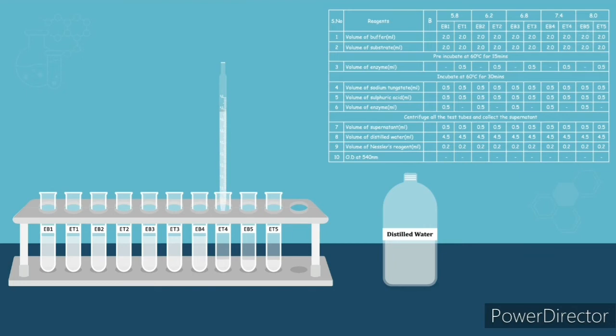Distilled water is added to make up the volume. This is based upon the principle that the ammonia formed forms a brown complex with the Nessler's reagent, which is read out at that particular nanometer. You are seeing the Nessler's reagent being added in the illustration.